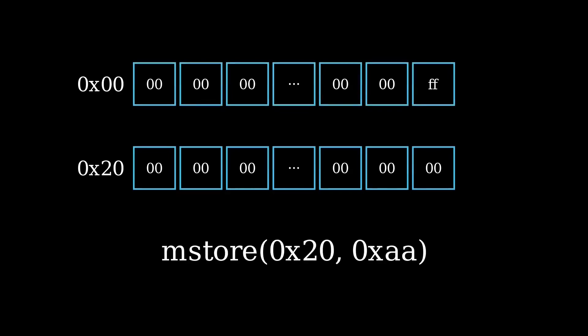As another example, if you wanted to store the value 0xAA starting from the memory location 0x20, then we will do mStore(0x20) with the value 0xAA. This will store the value 0xAA padded with 31 bytes of 00 to the left of the value AA, starting from the memory location 0x20. And you can see that at the end of row 2, the value 00 will be overwritten with the value AA.